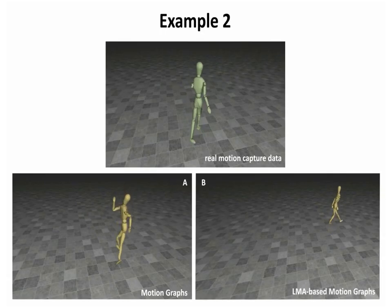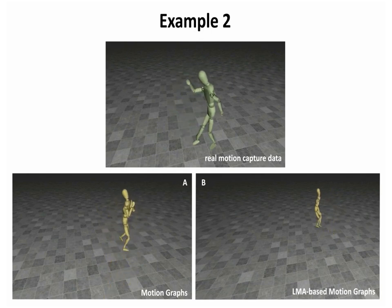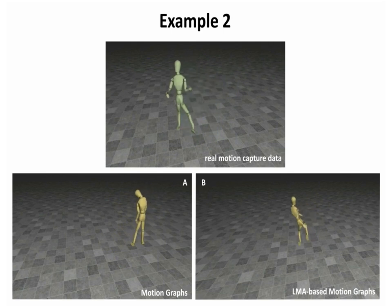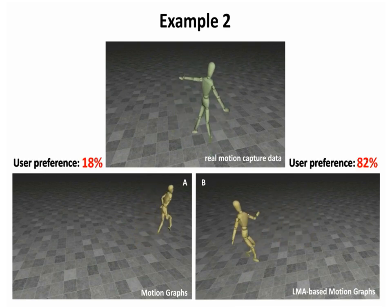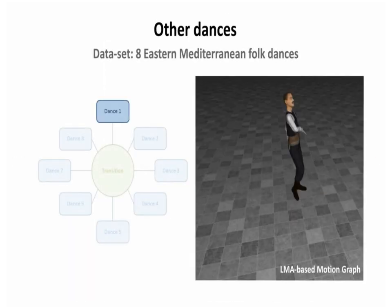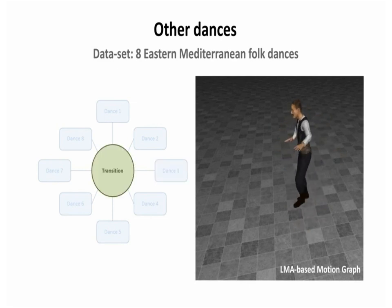Apart from generating motion by naively traversing the graphs, we show an example of a real motion captured dance, while two virtual characters attempt to accompany him using real-time motion synthesis based on motion graphs shown on the left, and our LMA-based method shown on the right. Users asked to rate this synthesis task preferred our method by 82%. We have also applied our method to Eastern Mediterranean folk dancing and have managed to produce plausible animations.